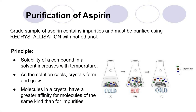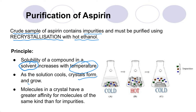In order to purify aspirin — when we create it we actually get a pretty crude sample that contains lots of impurities — we use a technique called recrystallization with hot ethanol. The principle is that the solubility of a compound increases in solvent with temperature, and as the solution cools, crystals form and grow. Molecules in a crystal have greater affinity for molecules of the same kind than for impurities.